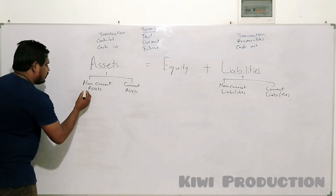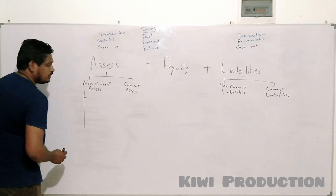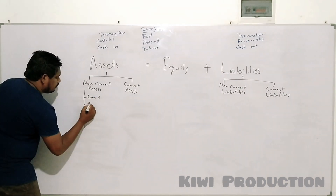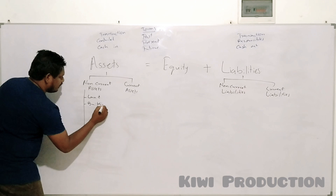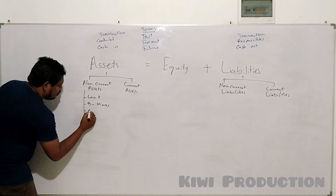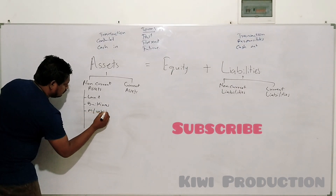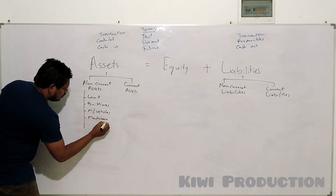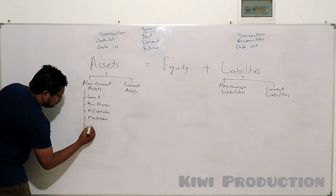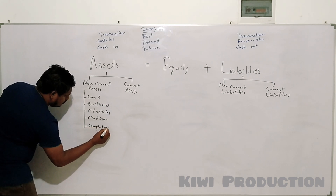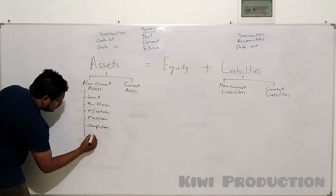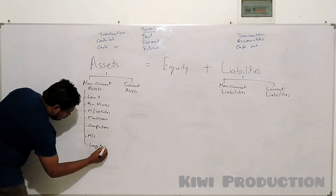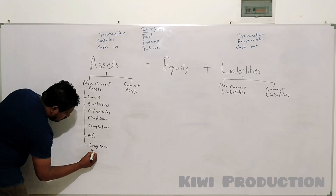Under non-current assets, there are many examples: land, buildings, motor vehicles, machinery, computers, patents, and long-term investments.